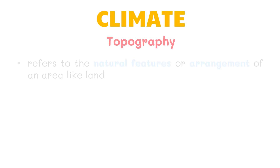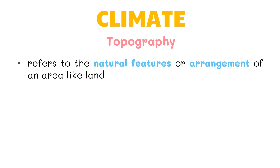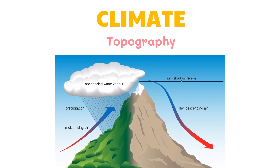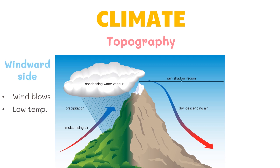Topography refers to the natural features or arrangement of an area like land. A mountain is an example of topographical features of land. Mountainous areas greatly affect the amount of precipitation in a certain region. As you may notice, the picture shows the two sides of the mountain — one side is facing where the wind blows and has lower temperature. This side is called the windward side.